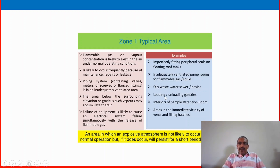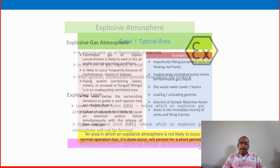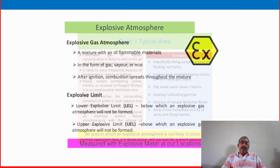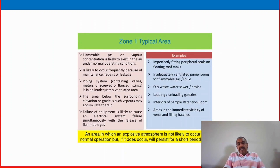Zone 1 examples include: oily wastewater sewers or basins, loading and unloading gantries, interiors of sample retention rooms, and areas in the immediate vicinity of vents and filling hatches. Zone 2: an area in which an explosive atmosphere is not likely to occur in normal operation, but if it does occur, will persist for a short period only. Zone 2 is already discussed — it is more than 3 to 4 meters away from Zone 0.